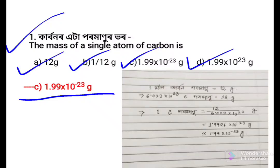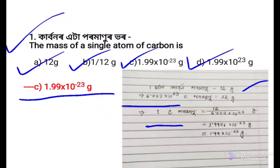Because 1 mol of carbon contains 12 gram. So 1 mol means 6.022 into 10 to the power 23 carbon atoms. Therefore, mass of 1 carbon atom = 12 divided by 6.022 into 10 to the power 23 gram. Calculating that gives 1.99 into 10 to the power minus 23 gram. So the answer is Option c.